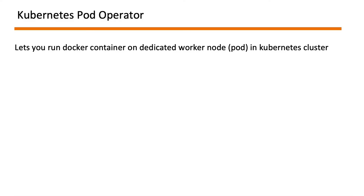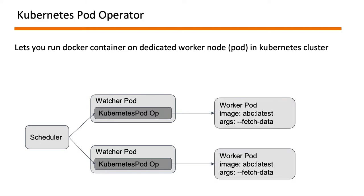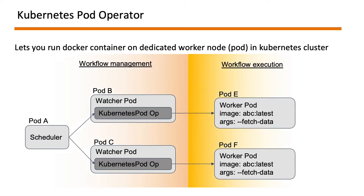The Kubernetes Pod operator lets you run the Docker container on a dedicated worker node in a Kubernetes cluster. A scheduler spins up a DAG with two tasks, each using the Kubernetes Pod operator, which then spins up a new worker node with the specified image and arguments. These run on dedicated worker nodes, also known as pods. Pod B is the watcher pod and pod E is the worker pod. The watcher pod monitors the worker pod — as soon as it finishes, it updates the task status in Airflow and fetches logs from the worker pod and stores them in the Airflow logs directory.